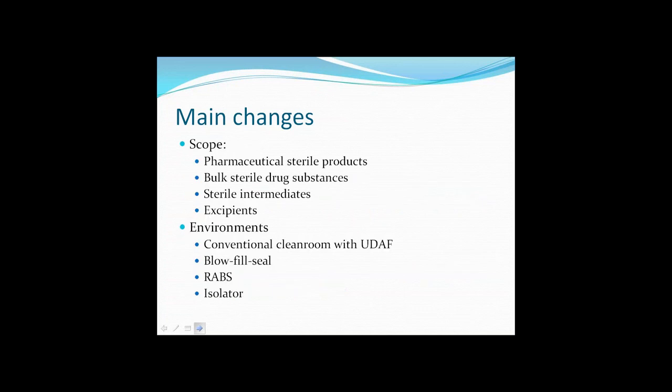The scope of the chapter has now been narrowed to look at pharmaceutical sterile products, bulk sterile drug substances, sterile intermediates, and excipients. Although the chapter is not applicable to non-steriles, those not working in aseptic manufacturing environments will still find elements within the revision of interest, and there may be aspects to take away and review in your own environmental monitoring regimes.